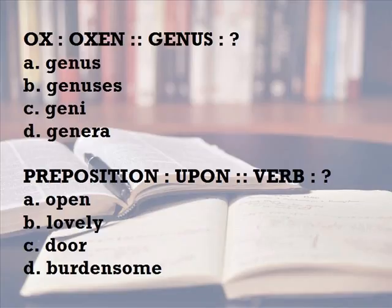Preposition is to a pun as verb is to — A) open, B) lovely, C) door, D) burdensome. Just as a pun is a preposition, so open is a verb.